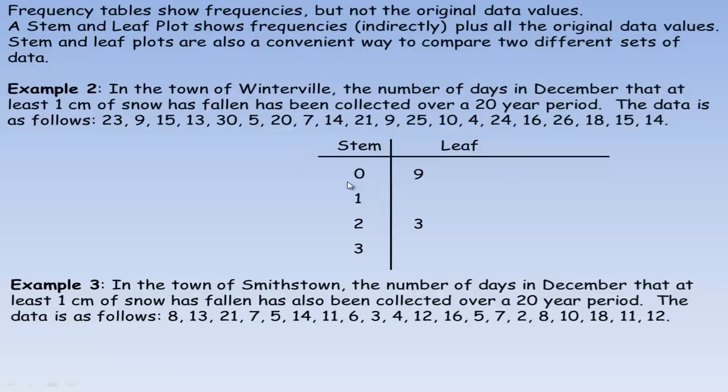The next number is nine, so we put a nine here. Fifteen is next, so that would go across from the one. Thirteen would go right here, so we put a three. Thirty, so we put a zero. Five would go over here beside the nine. Twenty, so we put a zero there. Seven, fourteen, twenty one, nine, twenty five, ten (zero here), four, twenty four, sixteen, twenty six, eighteen, fifteen, and fourteen.